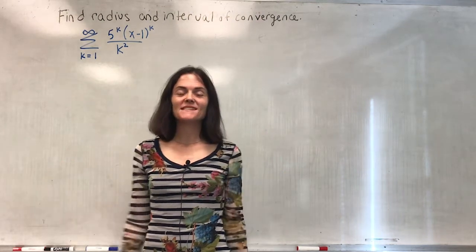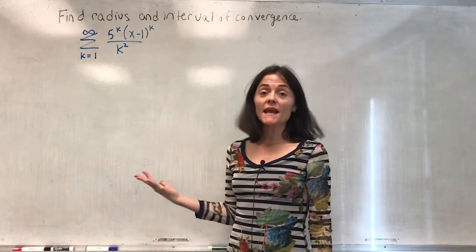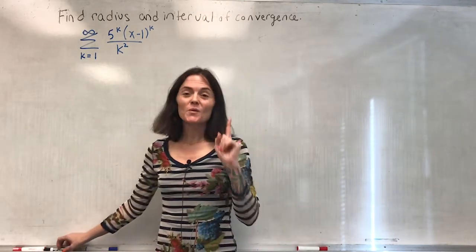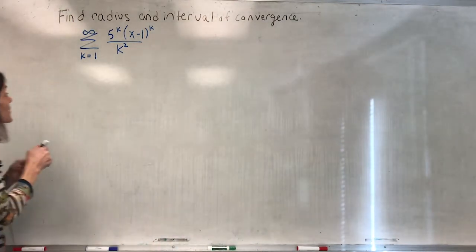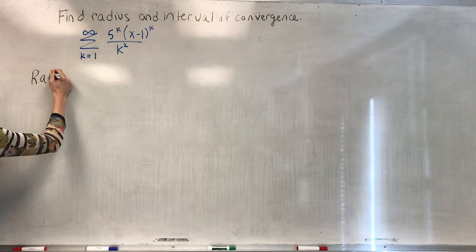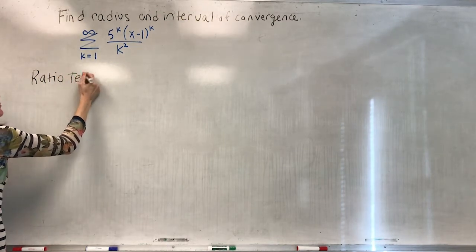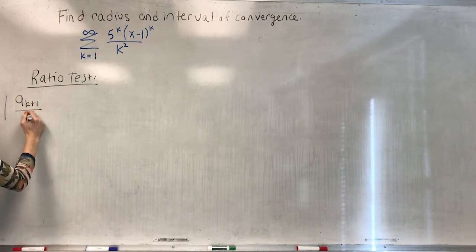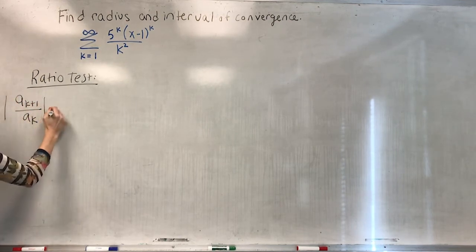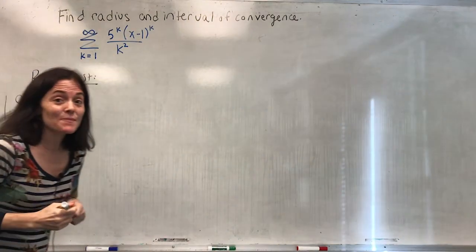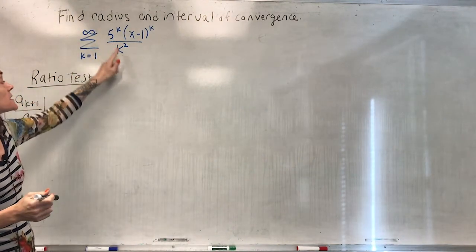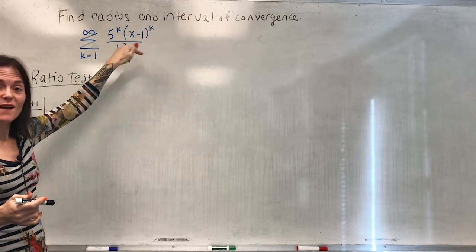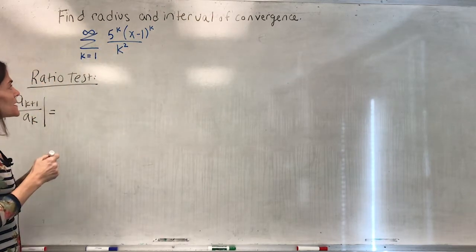Let's do two examples where we find the radius and interval of convergence of a power series. Here is the first. We want to use the ratio test, which we have practiced and will practice some more right now. We need the absolute value of a_{k+1} over a_k. If you look at this power series, 5 to the k and k squared are always positive, so I just need absolute values on the x minus 1 part.